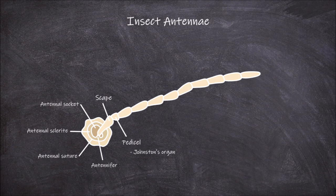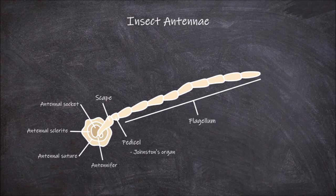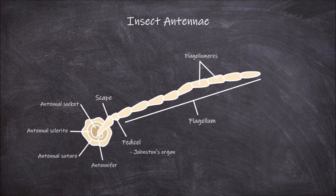The third and final part of an antennae is the flagellum. The flagellum itself is segmented, often with many segments called flagellomeres. Sometimes the flagellum is reduced to just a single segment. The flagellum region of the antennae is often modified and highly variable.